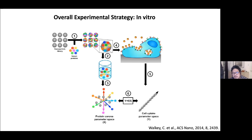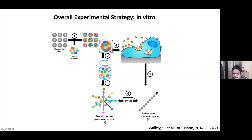In one set, we take the nanoparticles, digest them, and run mass spectrometry on the proteins to determine what proteins adsorbed onto the surface. In the other set, we incubate the protein-coated nanoparticles with cells and measure the amount bound to or taken up by cells—we use the term 'cellular association' since we don't differentiate between bound and taken up. We then use a mathematical algorithm to correlate the proteins adsorbed to the surface with the cellular association data.